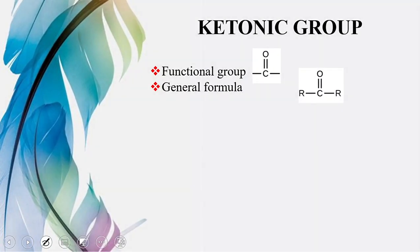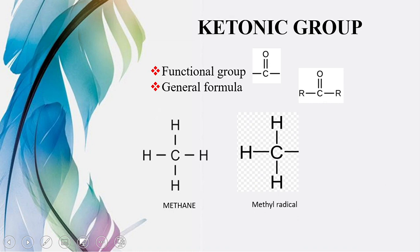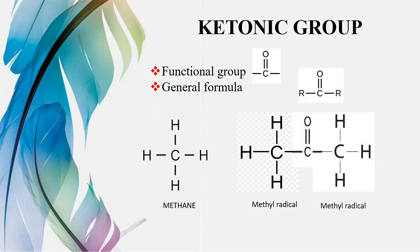Ketonic functional group — wahi same, lekin yahan par C double bond O functional group hoga, aur koi H nahi hoga dono sides par alkyl radicals honge. Jaise ke humare paas hai methane — ban gaya methyl radical — ab yahan par humne lagaya ek aur methyl radical, aur inke darmiyaan mein humne apna functional group C=O add kiya. Yeh teen carbon atoms hain, kyunke humare paas ketonic functional group show kar raha hai. To ab iska naam kya hai: dimethyl ketone.